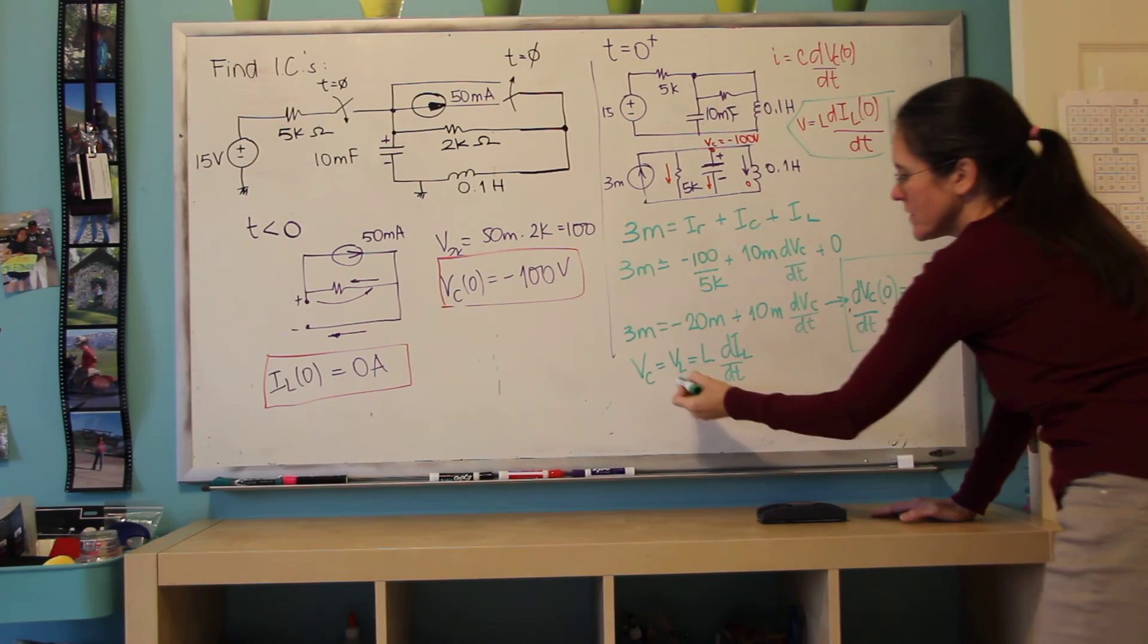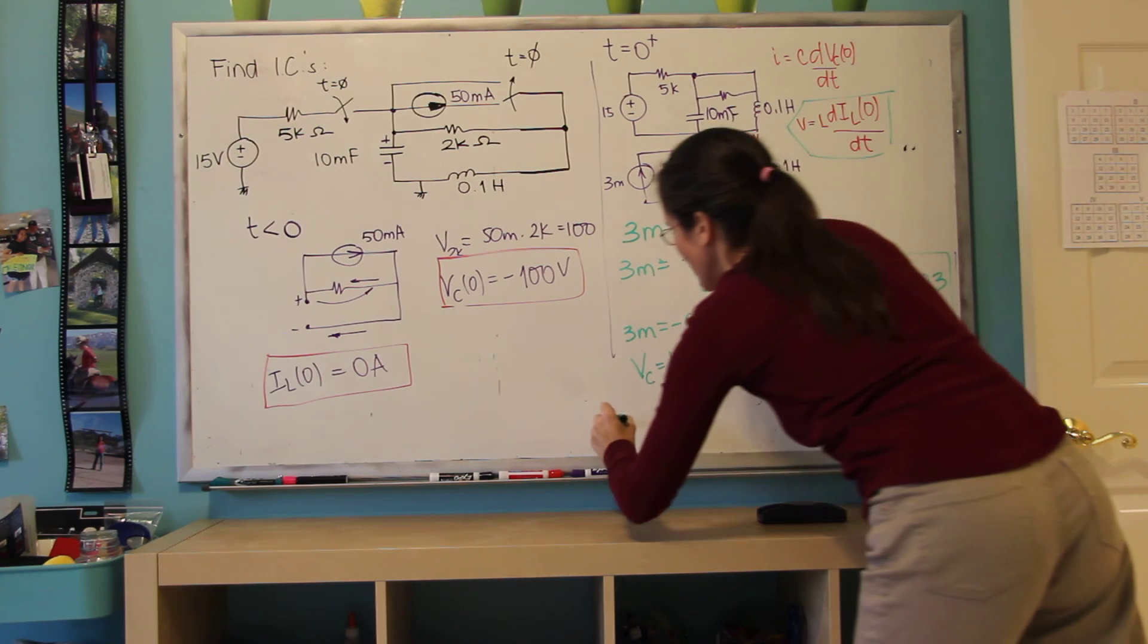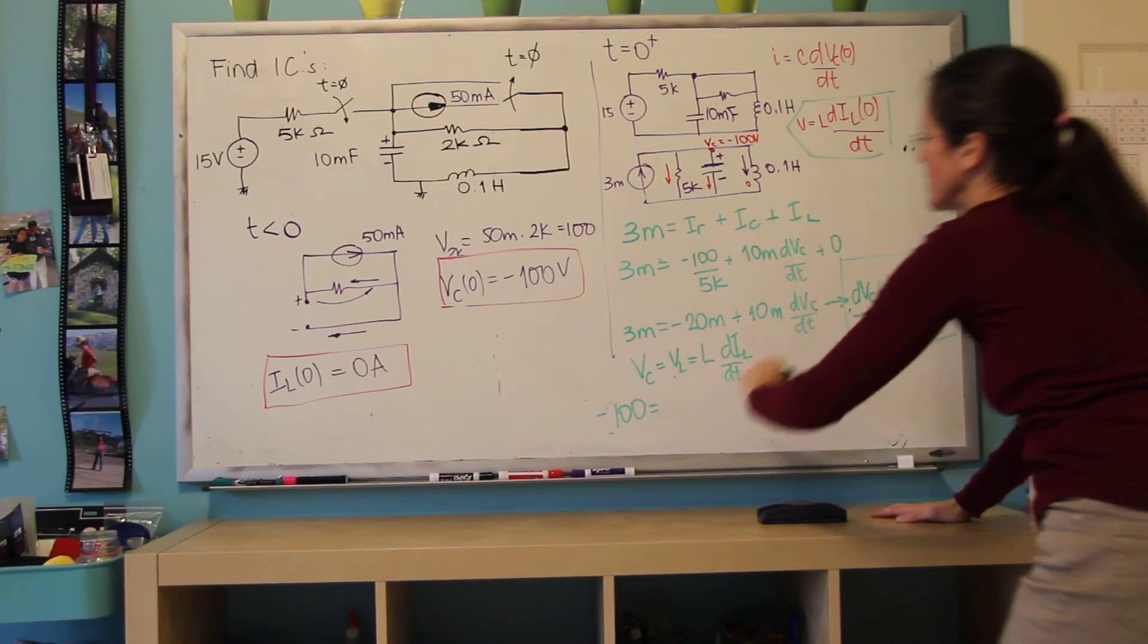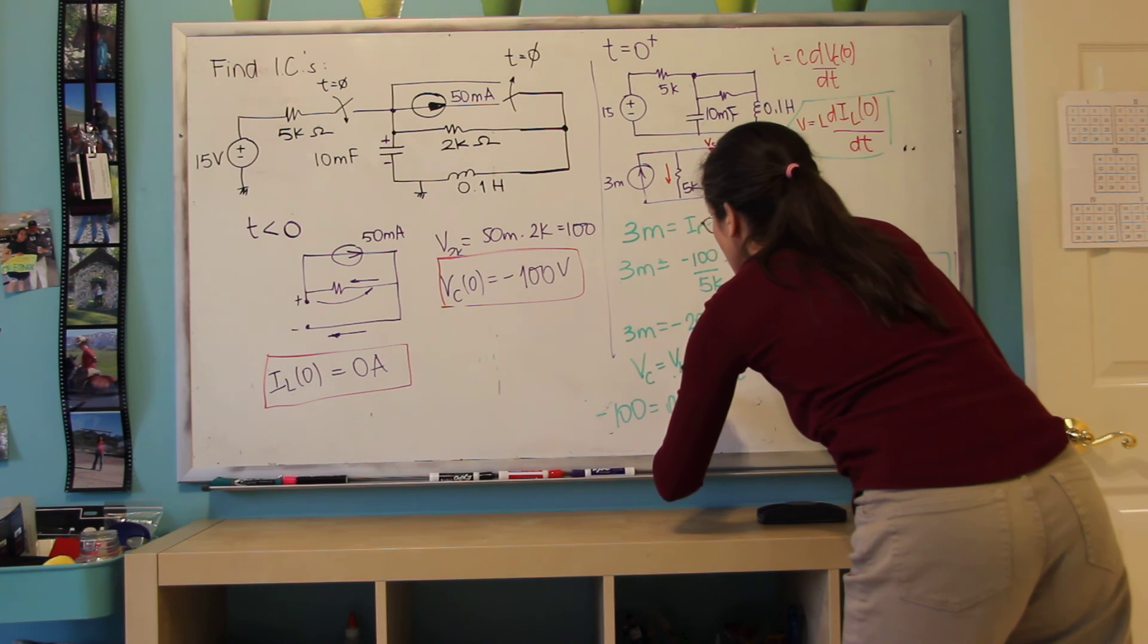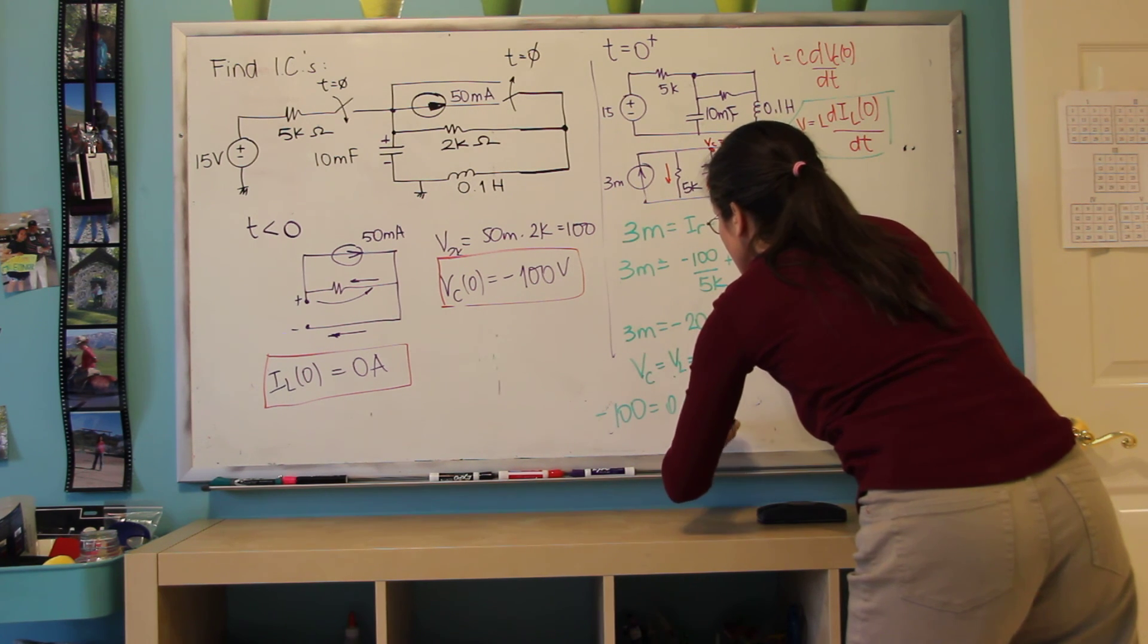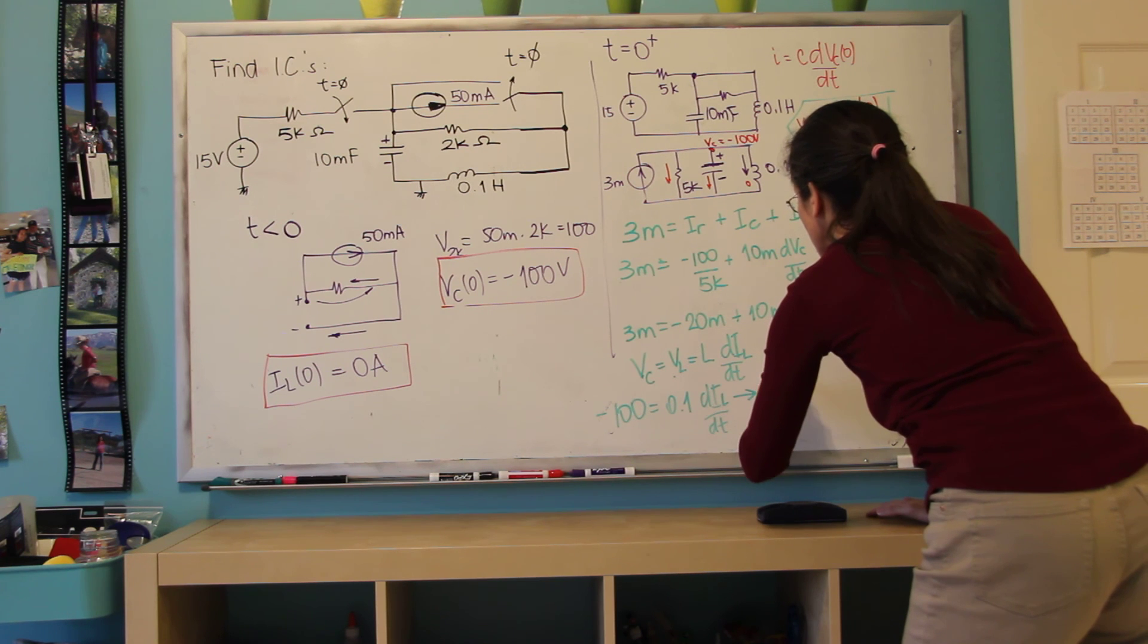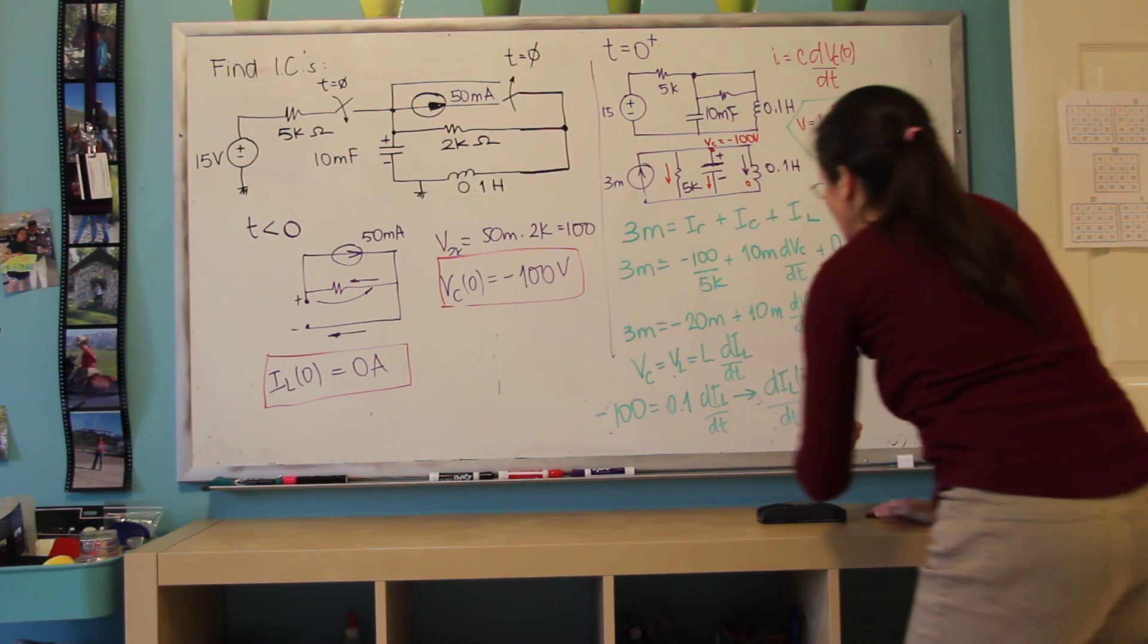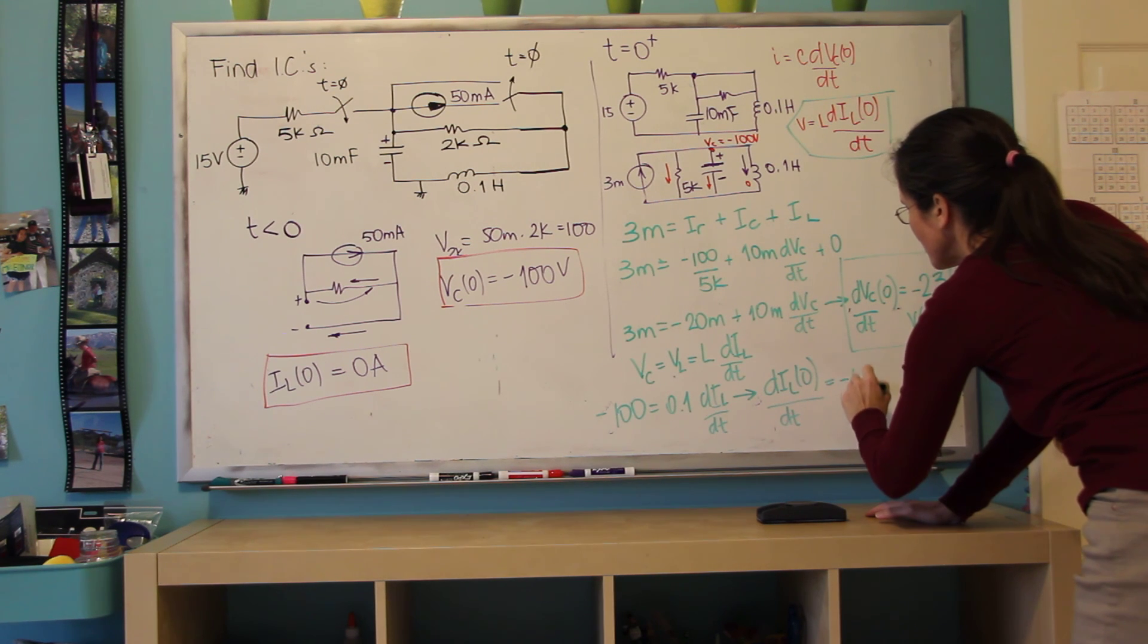And at zero I have this as minus 100, so minus 100 is 0.1 di dt. So at zero plus DIL at zero is minus 1,000 amps per second.